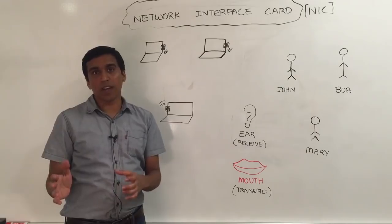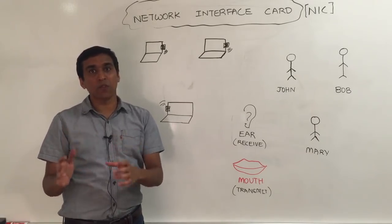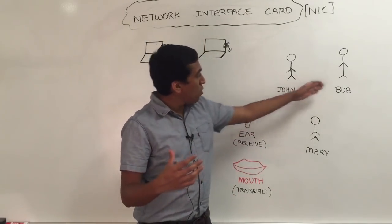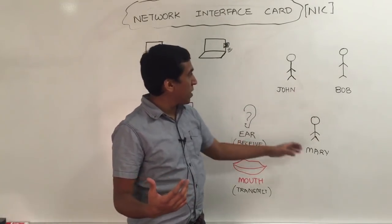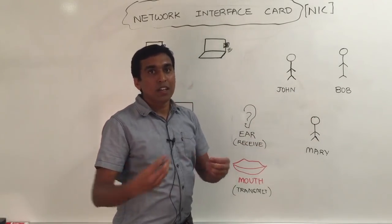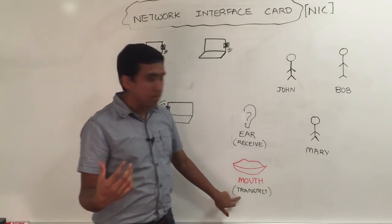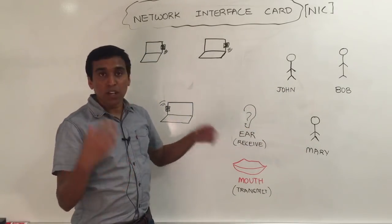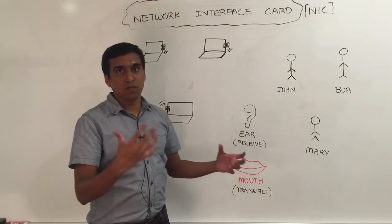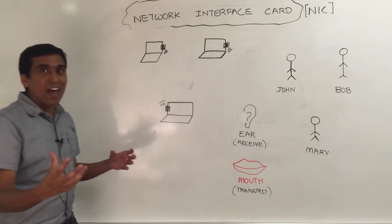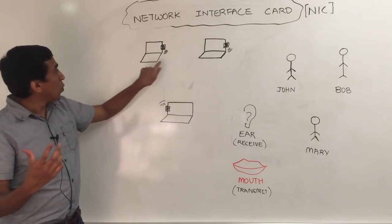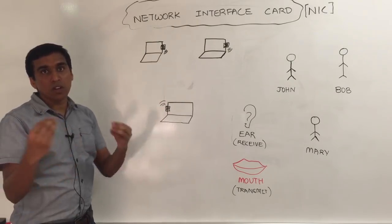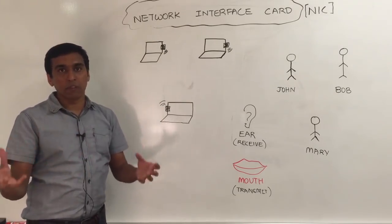We are going to talk about an important device in networking called a network interface card or NIC. Before we talk about that, I want to give you an example of how humans communicate. Imagine we have three different people, John, Bob and Mary. How do they talk? When you're talking, you're using your mouth. So you're transmitting information using the mouth and the other person is receiving the information through their ears. Now how do computers talk or listen? They have a device called network interface card, which acts as the ear and the mouth of the computer. That's how computers talk through the network interface card.